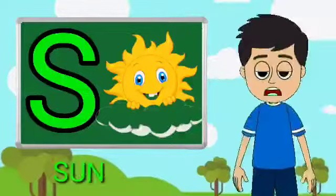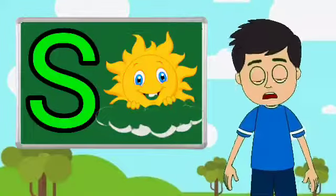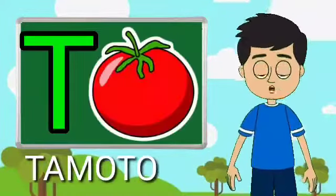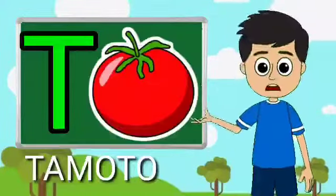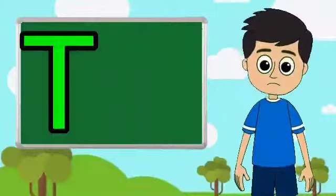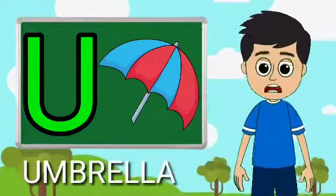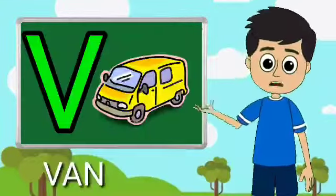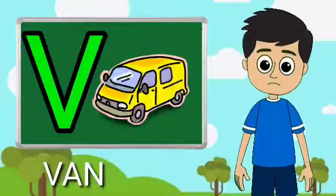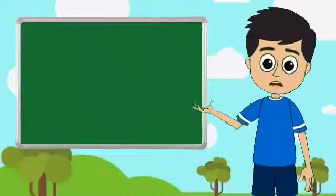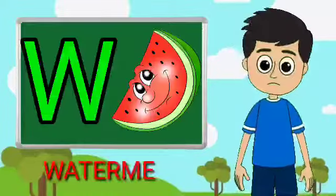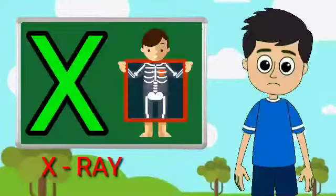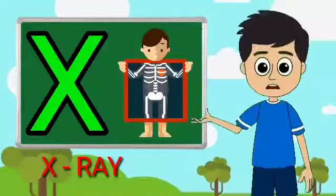S for sun, T for tomato, U for umbrella, V for van, W for watermelon, X for extra.